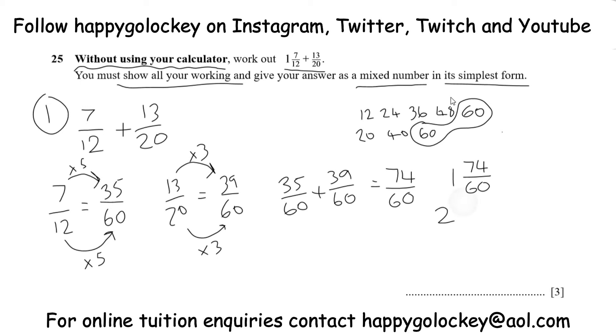Now we've got 14 60ths left over. 1 and 74 60ths is the same as saying 1 and 60 60ths and 14 more 60ths. So we get 2 and 14 60ths.